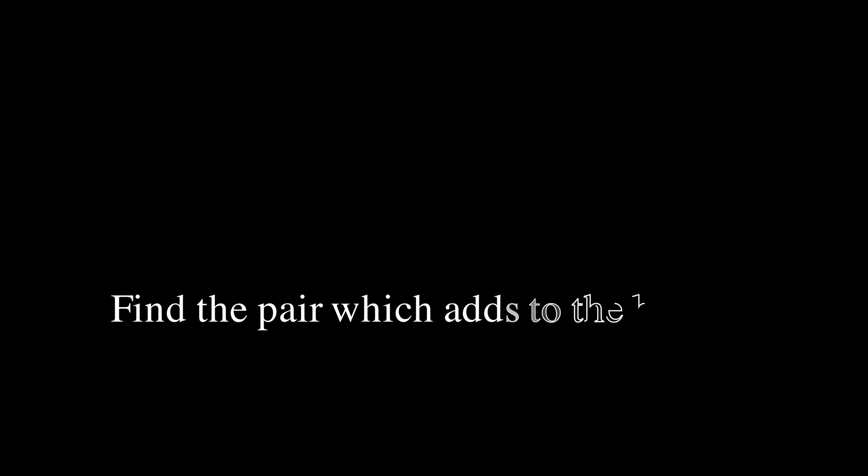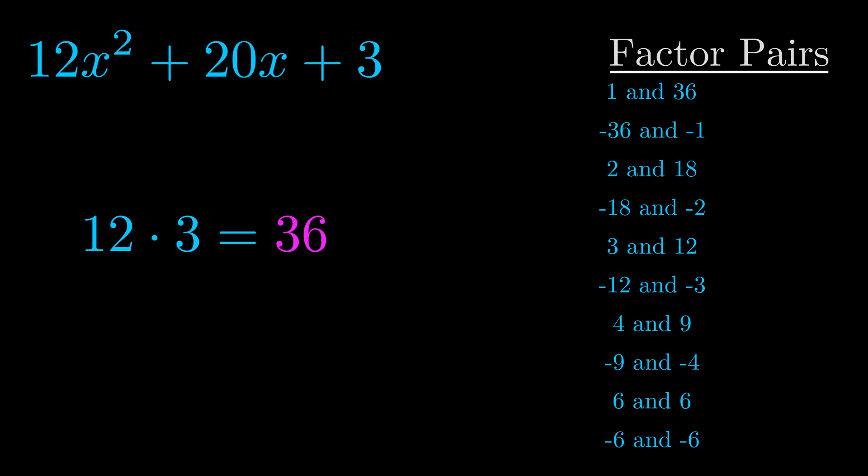The b value is the coefficient on the x term. That's the middle term, the one that we haven't done anything with yet. And really this is the only factor pair that we need.